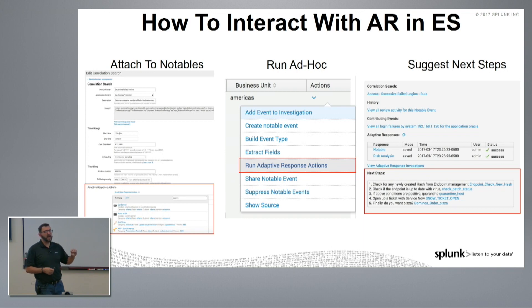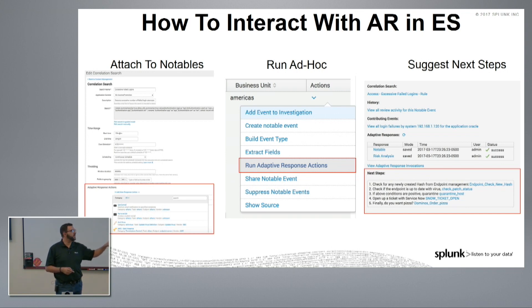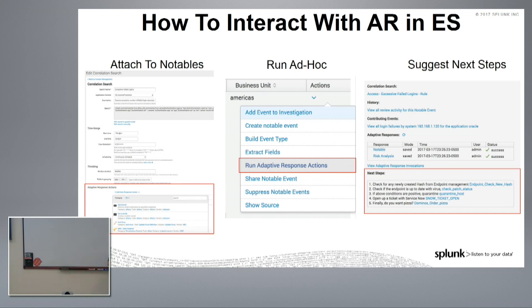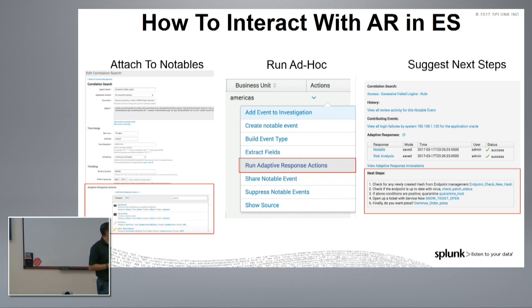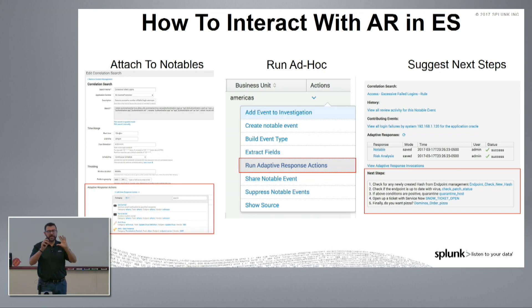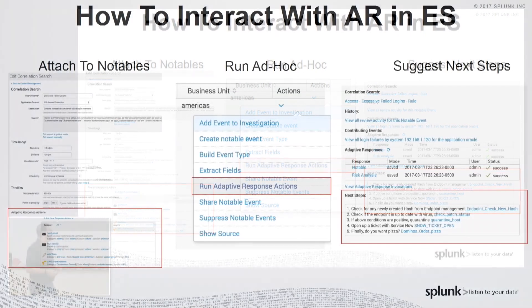This screenshot shows how adaptive response can be triggered within Enterprise Security. It can be attached to a notable for automation — if a correlation or rule fires, trigger these actions. Or you can run it on demand: while investigating an incident, an analyst or responder can trigger an action right away manually from within Enterprise Security when looking at reported events.